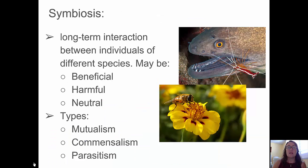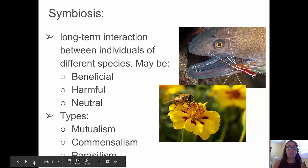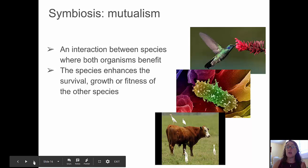Symbiosis is the long-term interaction between individuals of different species. That interaction may be beneficial, harmful, or neutral. There are three types: mutualism, commensalism, and parasitism. We'll talk about each one of those individually, starting with mutualism.